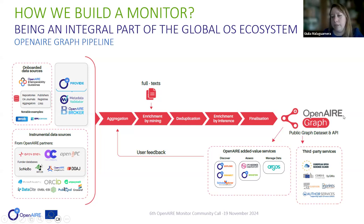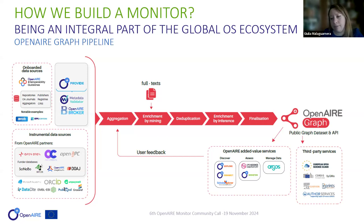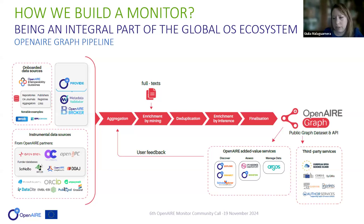It's important to mention that the Open Air Graph is a core service of EOSC, the European Open Science Cloud. It's fully used in Cordis and connected with Sigma. This is particularly valuable for institutions or organizations that have EOSC as a funder. It's also used in EPRINTS author services and others.